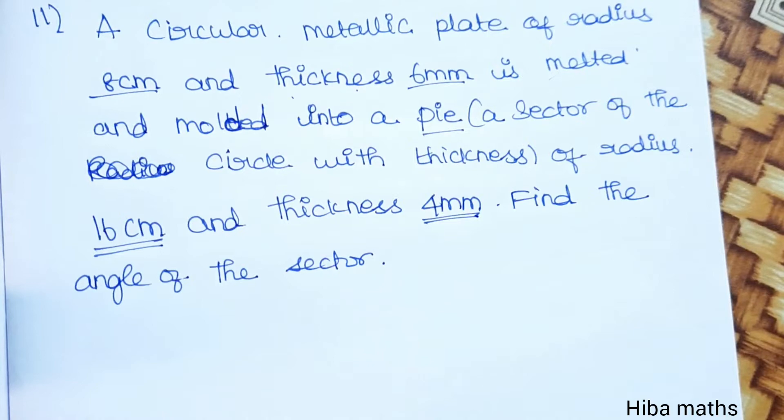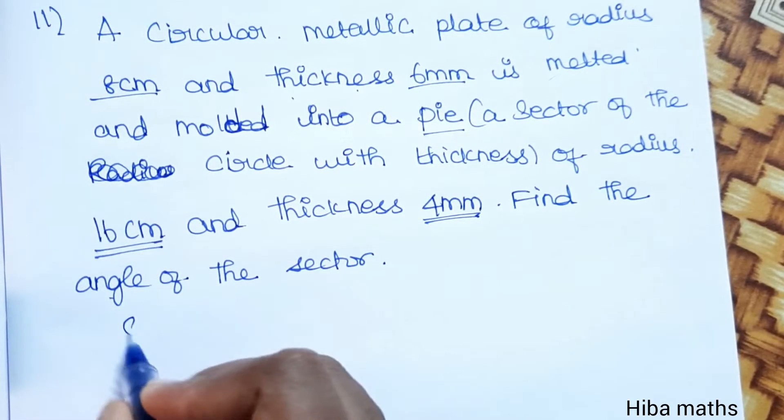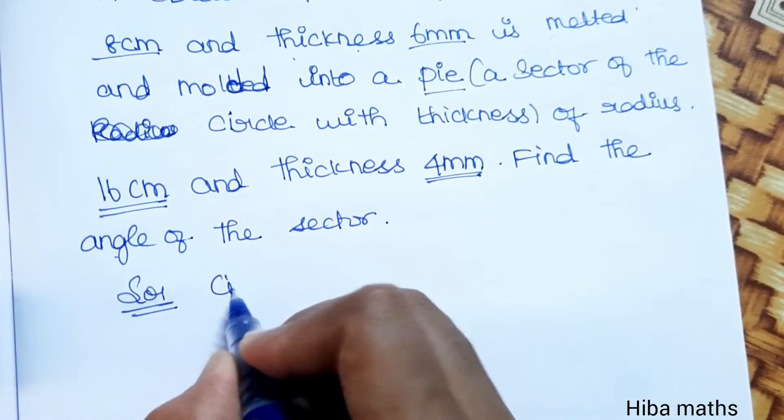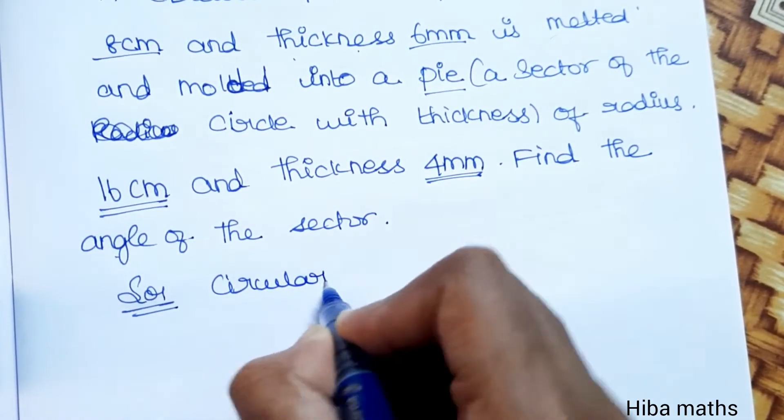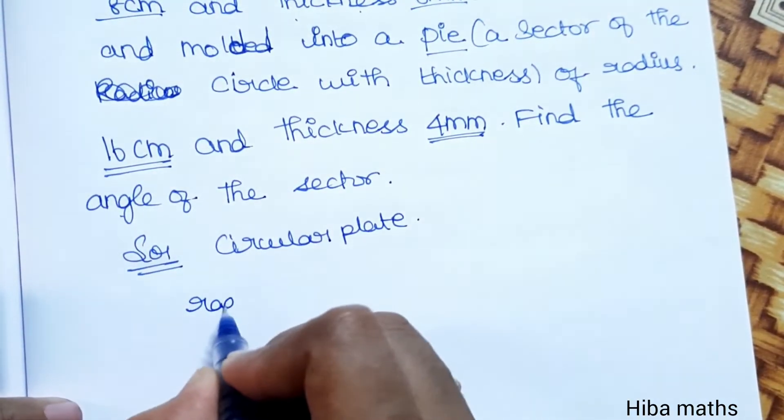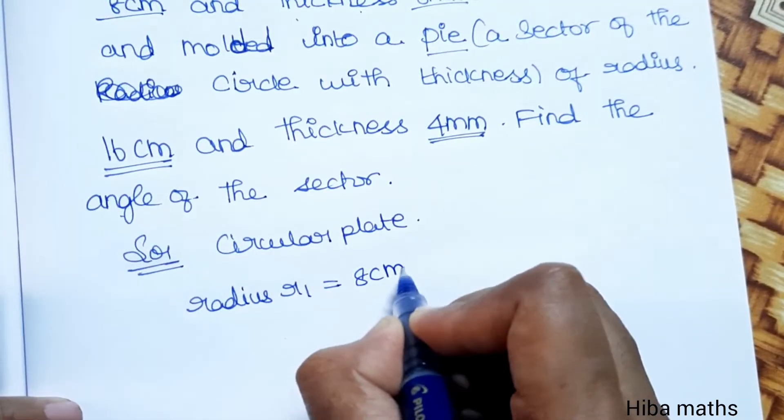For the solution, the circular plate has radius r1 equal to 8 cm.